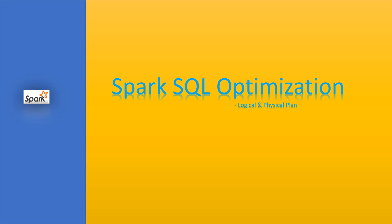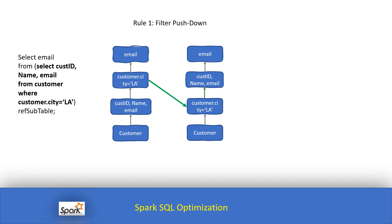Hello everybody, today we'll talk about Spark SQL optimization. We'll try to understand logical and physical plans, and before that we'll talk about some of the rules which are very important to create a logical plan. The first rule we'll talk about is filter pushdown.